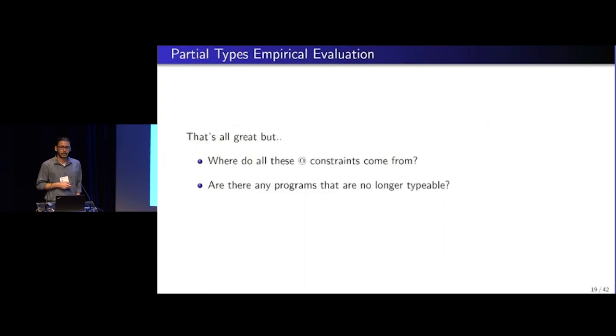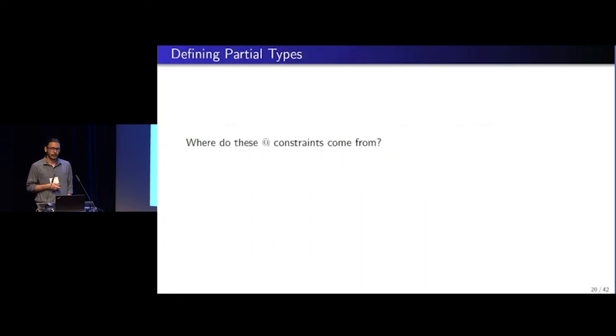But where do all these at constraints come from? How do we wire them in our compiler? And if we do, we now have more constraints. So the second question would be, are there any programs that are no longer typeable? So let's tackle the first one. Well, we are at ICFP and elaboration is our bread and butter. So we use that.